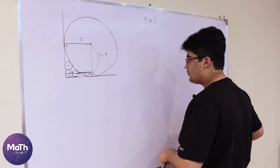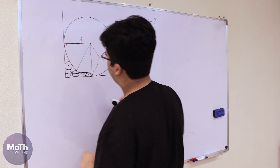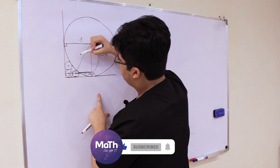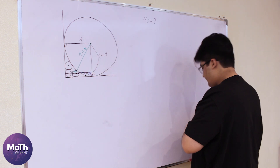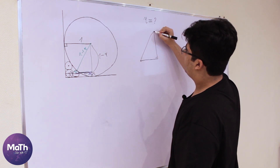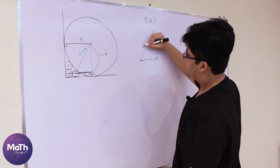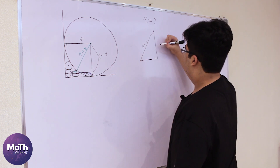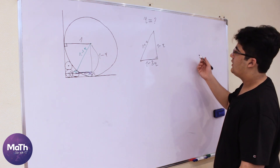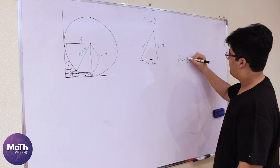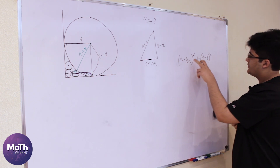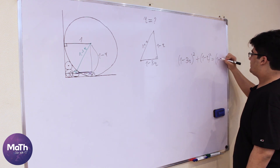If we draw another line here, we have the big radius of length 1 and the small radius r, so this side will be 1 plus r — and that is the hypotenuse. The other two sides are 1 minus r and 1 minus 3r. So by the Pythagorean theorem: (1 minus 3r) squared plus (1 minus r) squared equals (1 plus r) squared.